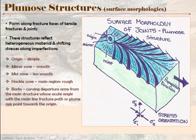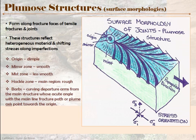We want to talk about how we read the heterogeneities in the rock by the plumose structures. First, we have our origin, which is going to look like a little dimple. It represents the place where the joint began to propagate — that first break in the rock. These weaknesses that create our joints are usually associated with imperfections in the rock and with our Griffith cracks.